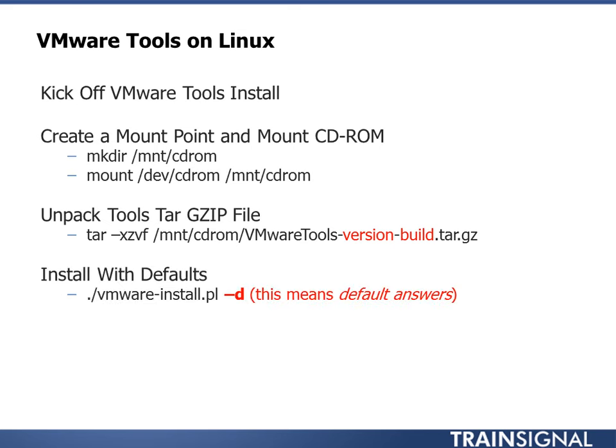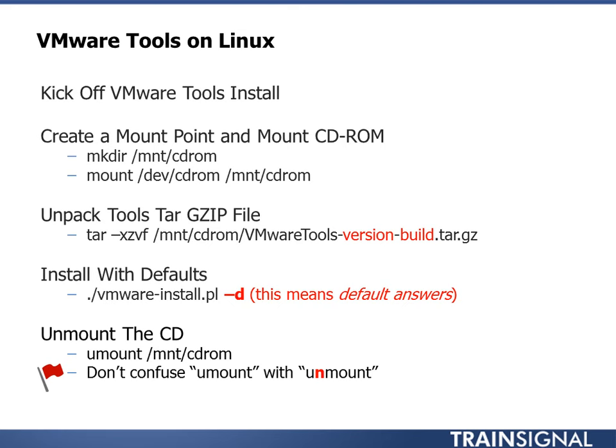Within that tar.gz file is a VMware install script. If we run that command with a -d at the end, it tells the script to use all the default answers — because without -d you'd have to answer about 50 questions, most of which you don't really care about. After installing, we'll do some housekeeping and unmount the CD-ROM. One red flag: a lot of people say the unmount command doesn't work. That's because there's no 'n' in umount — it's just 'umount', to save one letter.